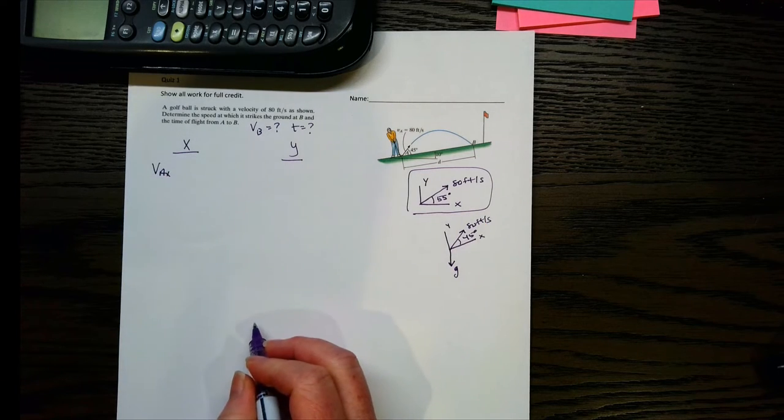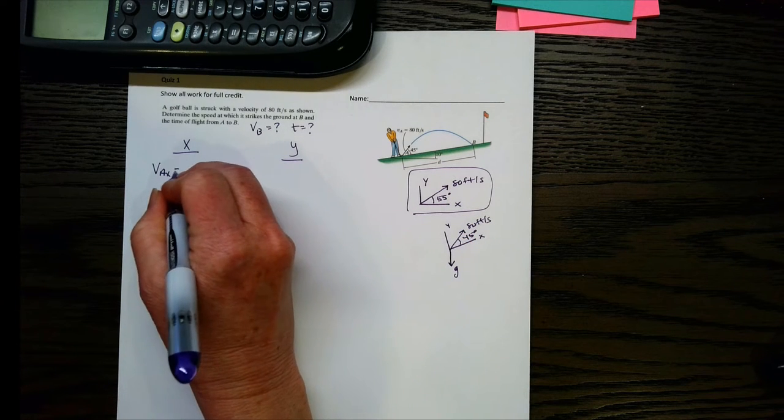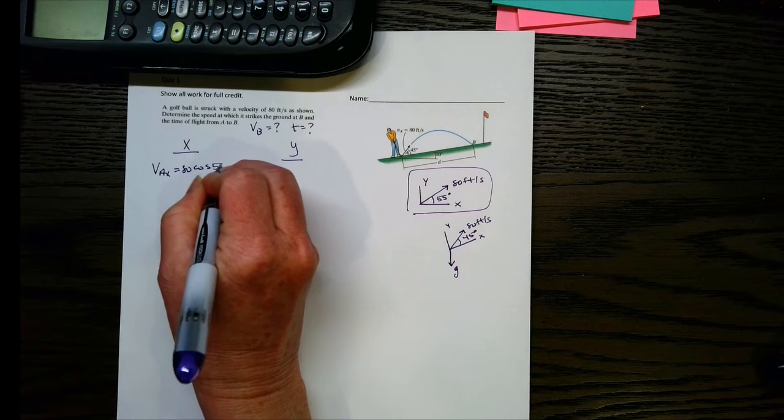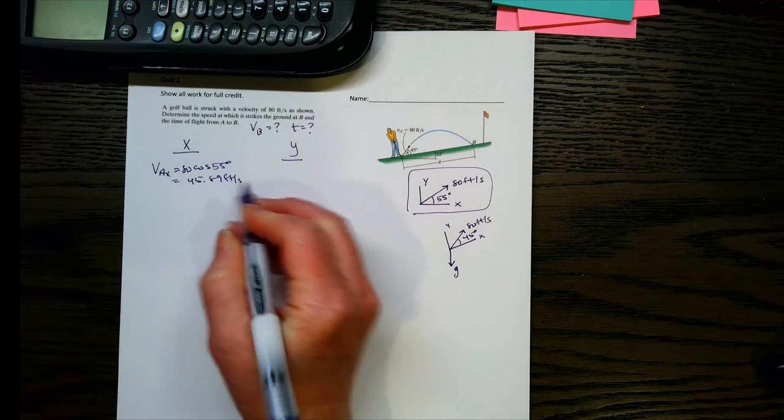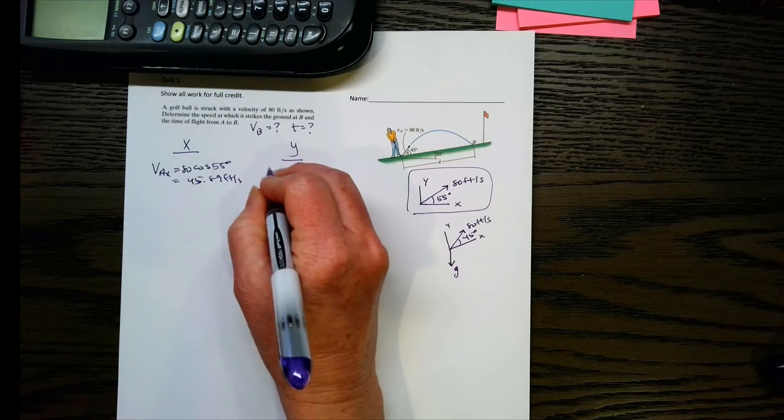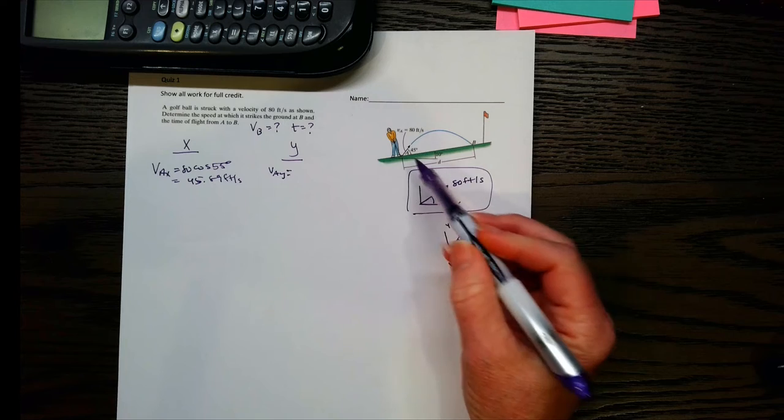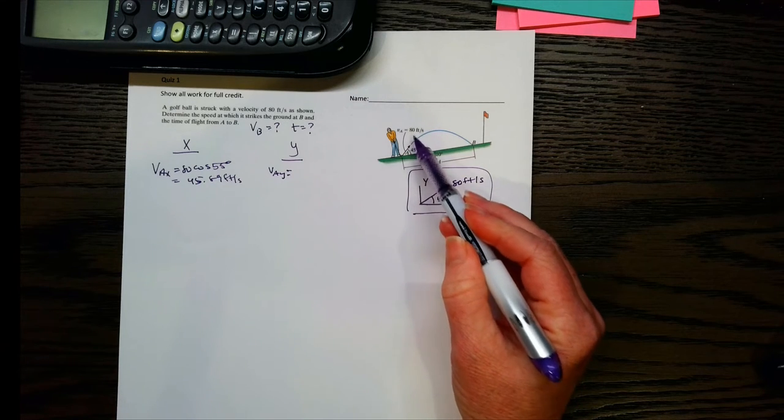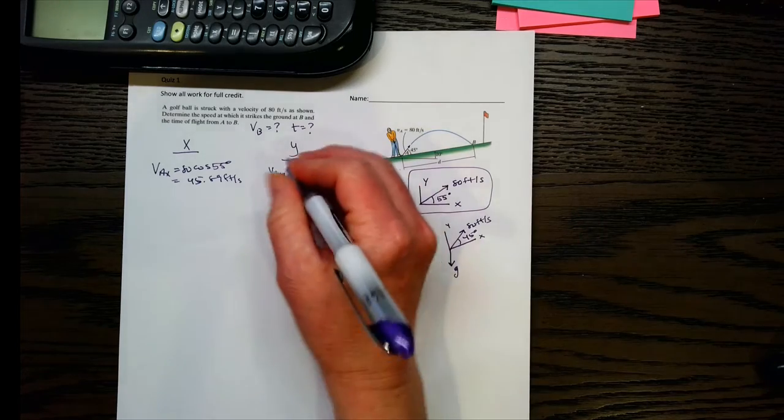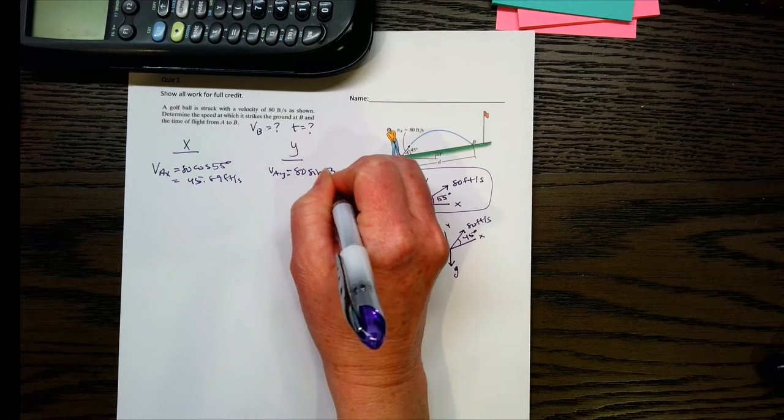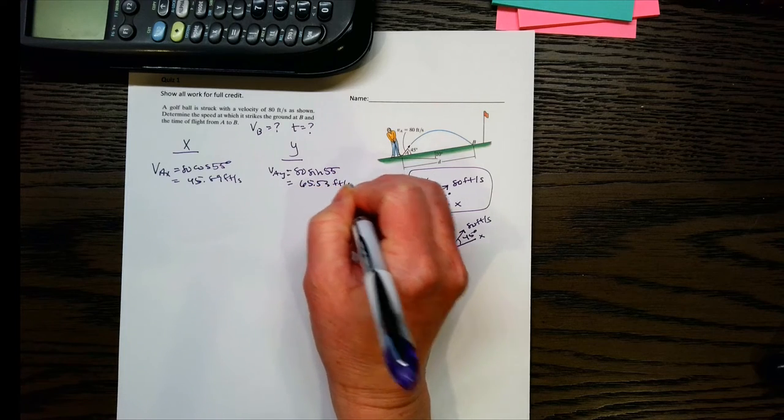So let's start at point A here. My velocity in the x direction at point A is going to be 80 cosine 55, and that is 45.89 feet per second. And then in the y direction, that velocity component at A is going to be 80 sine 55. So here you get 65.53 feet per second.